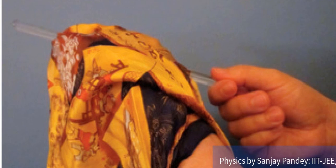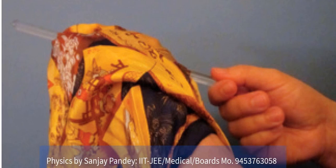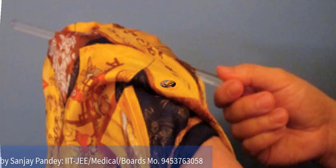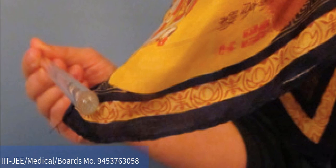When we rub objects together, such as wool against amber or silk against glass, we find that after rubbing, the objects attract to each other.